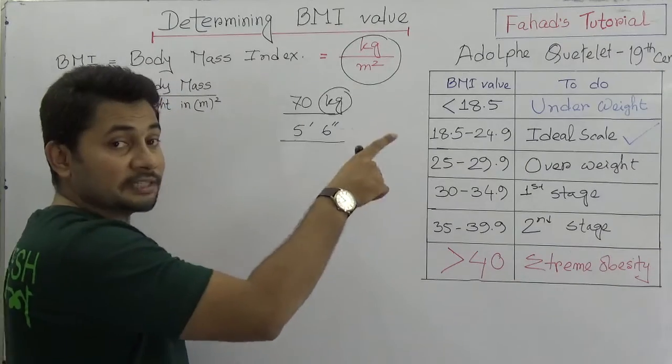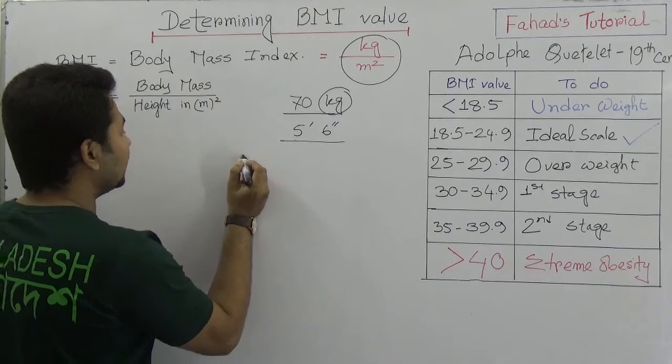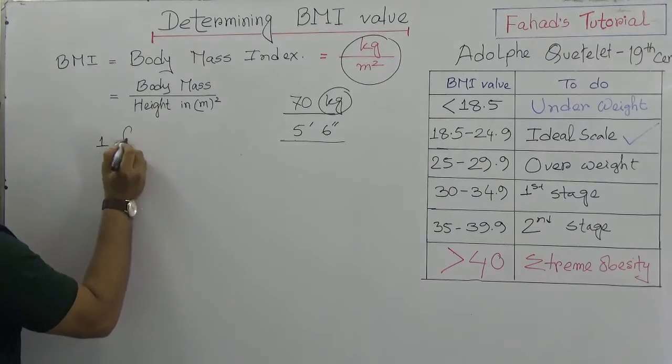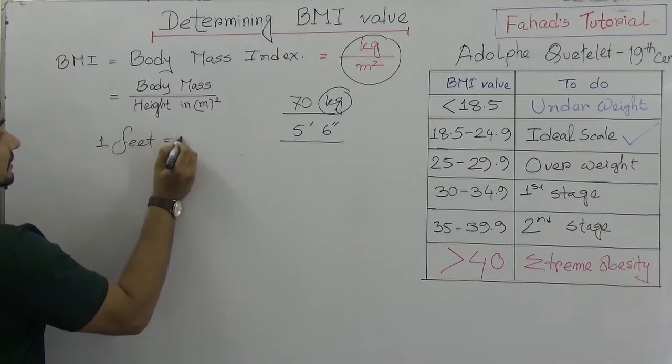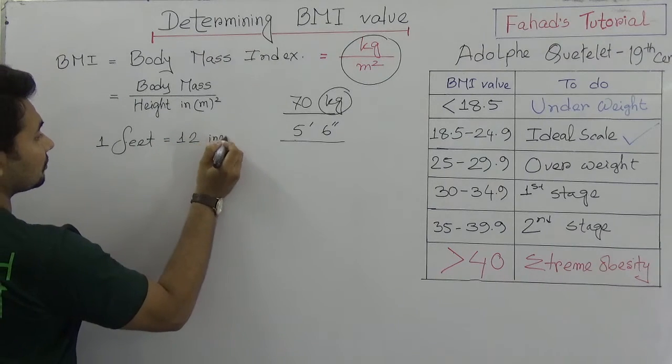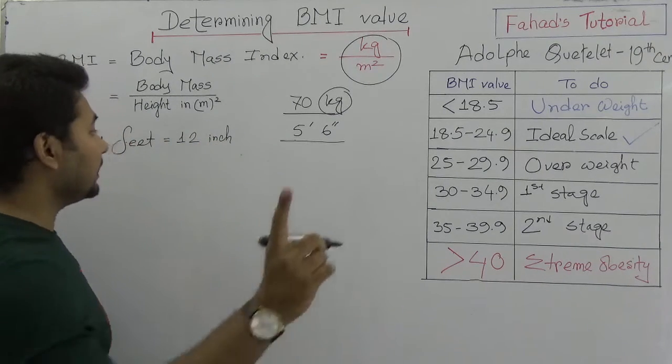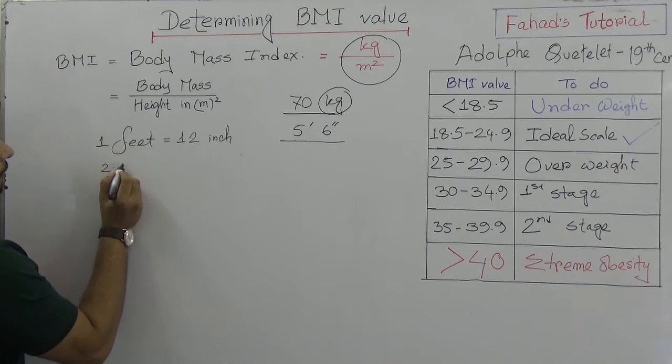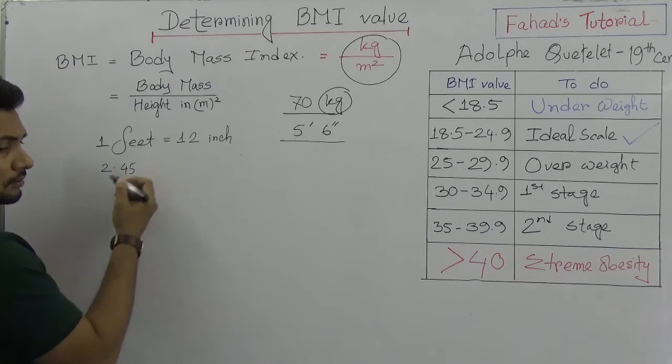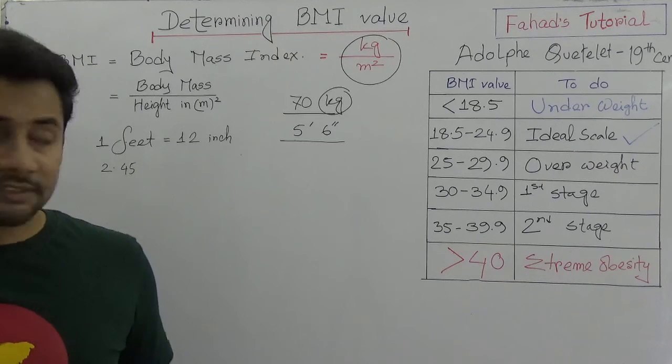So I know that if you don't know how to convert it into meter, think about it. We know that 1 feet is 12 inches. And another thing that 2.45 or we can say that 2.4 cm is equal 1 inch.